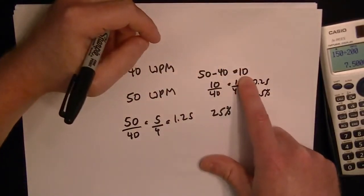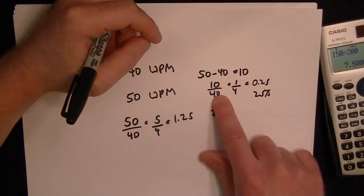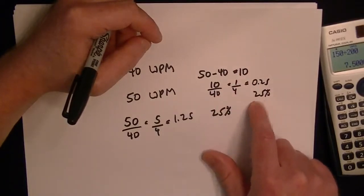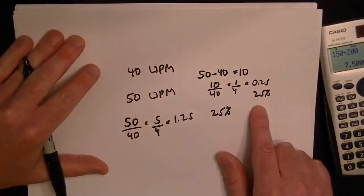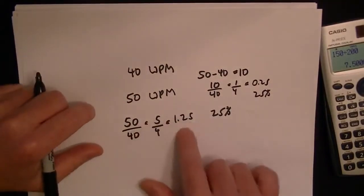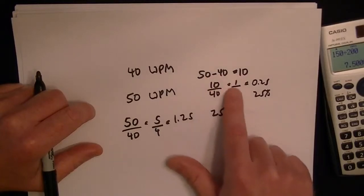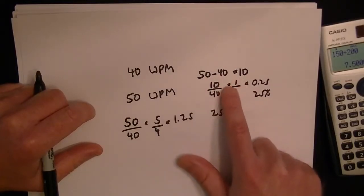So we're basically saying this 10 word increase is 25% of the original, so it increases by 25%. So you can do it this way, or you can figure out what the difference is and find out what that is in terms of 40.